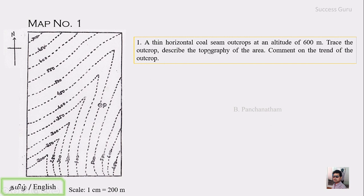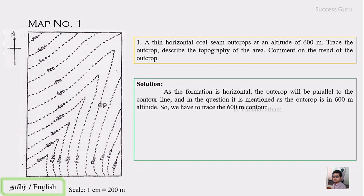The question is about a thin horizontal coal seam that outcrops at an altitude of 600 meters. You have to trace the outcrop, describe the topography of the area, and comment on the trend of the outcrop. So the coal seam is at 600 meters height from mean sea level, and it is exposed at the outcrop. We are dealing with a horizontal formation at a fixed height.